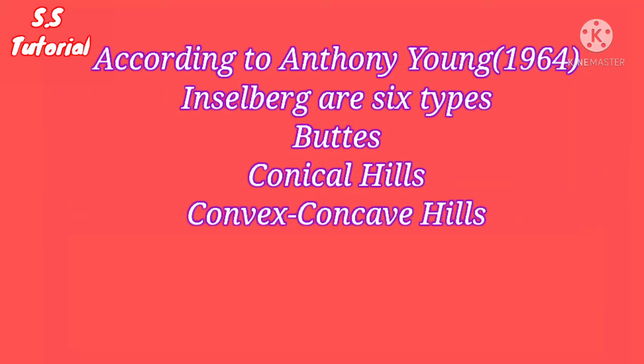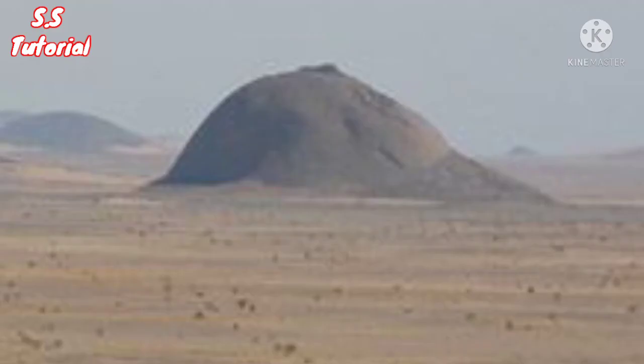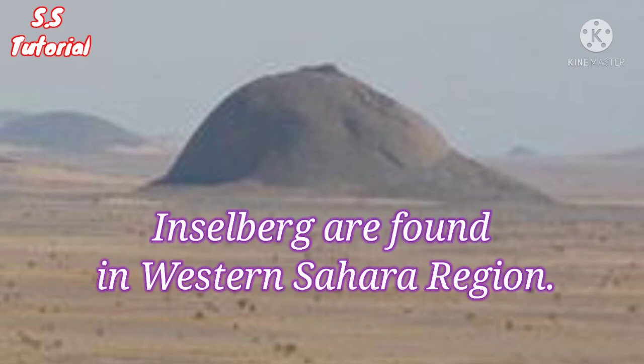According to Anthony Young (1969), there are 6 types of Inselbarge: Bates, Conical Hills, Convex-Concave Hills, Rock Crest over Regolith Cover Slope, Rock Dome, and Tor. Inselbarge are found in the Western Sahara region. Depositional landforms developed by the wind will be discussed in the next video.